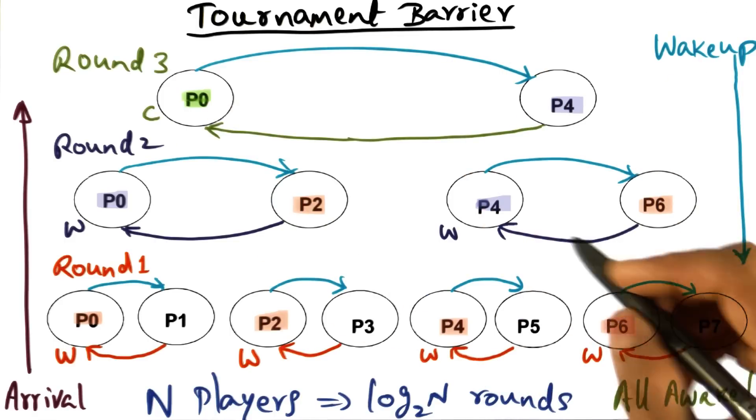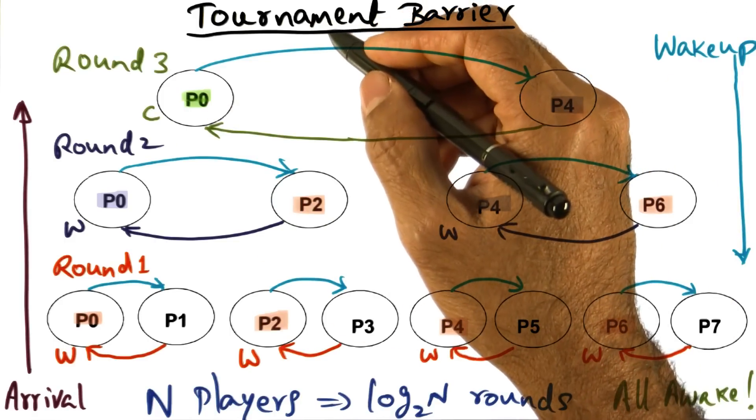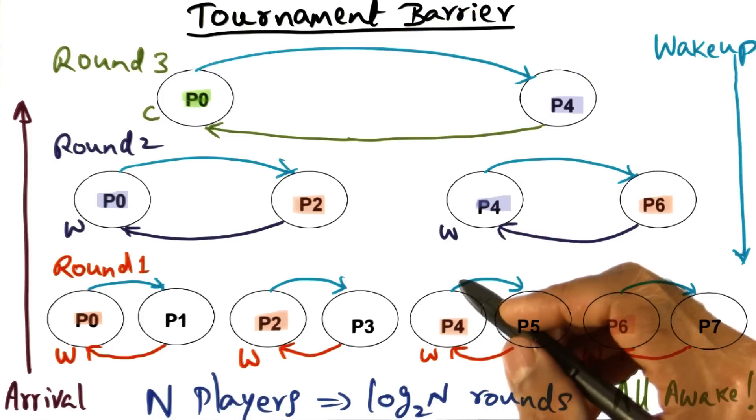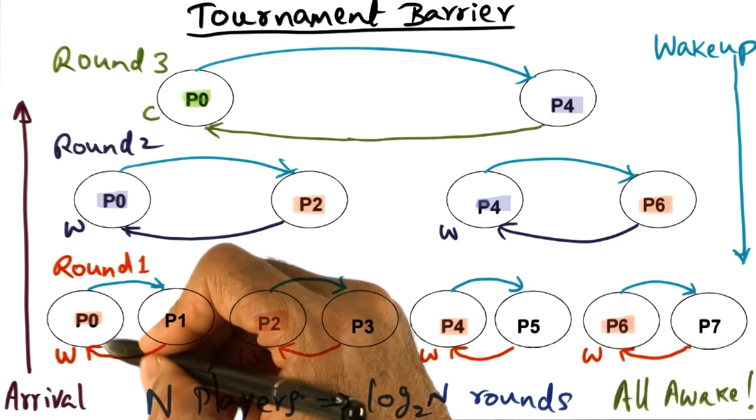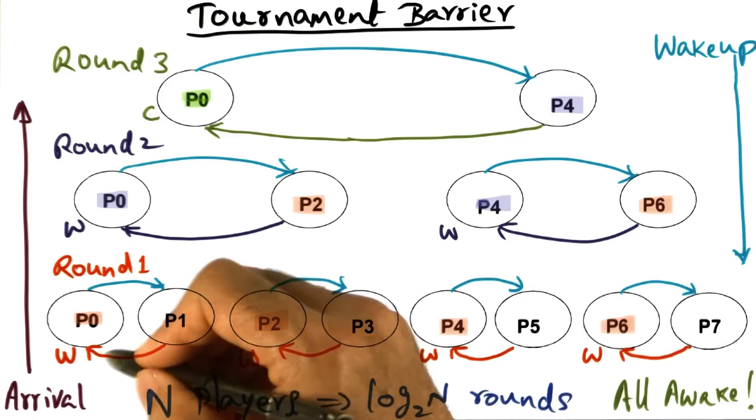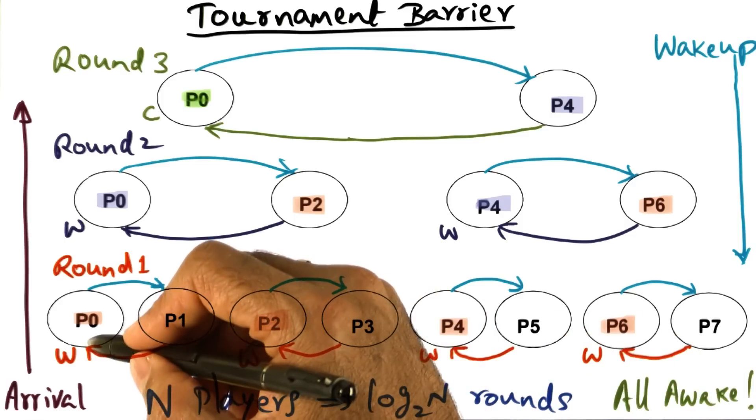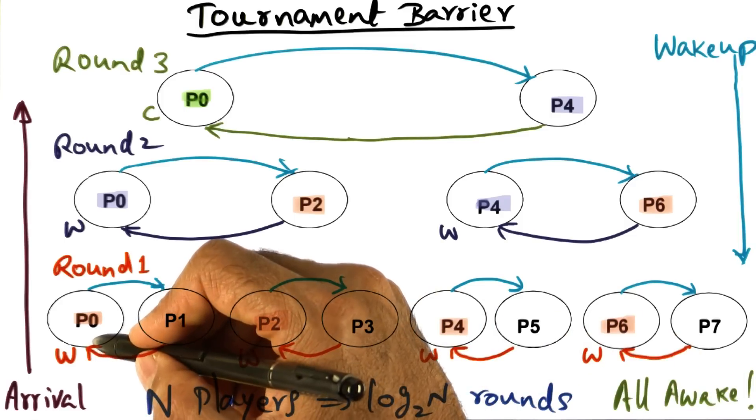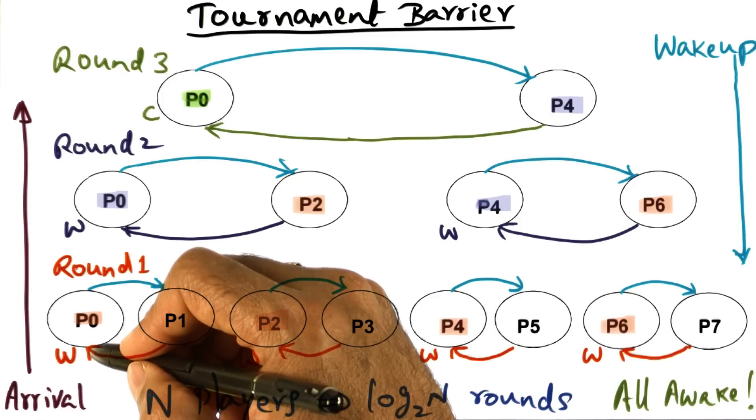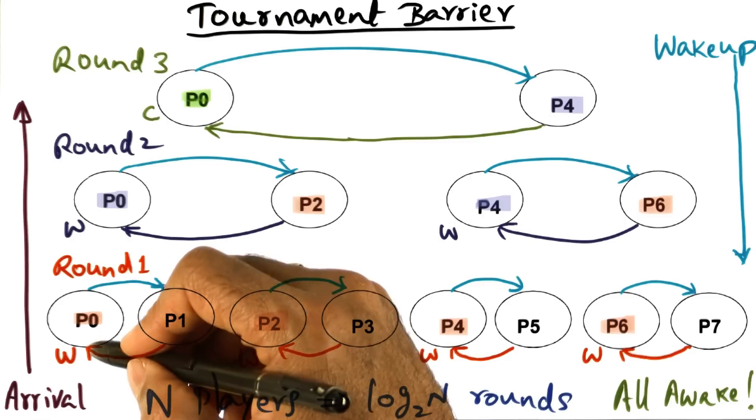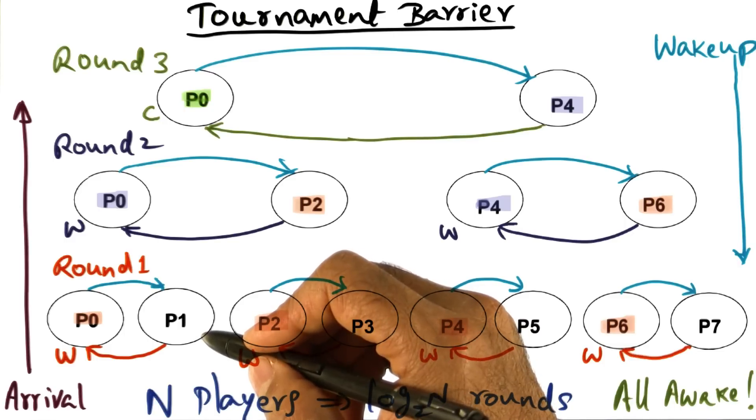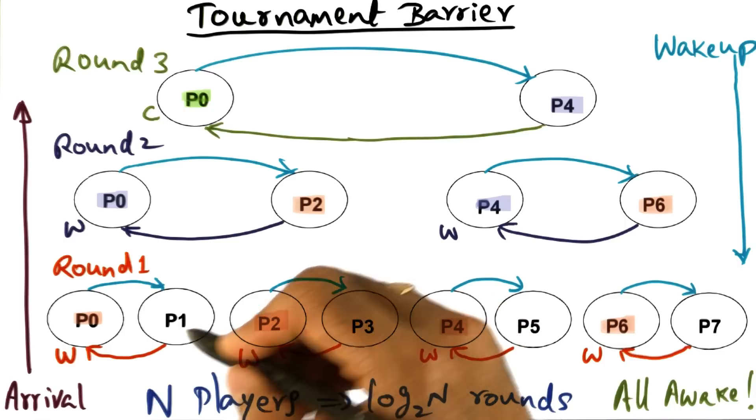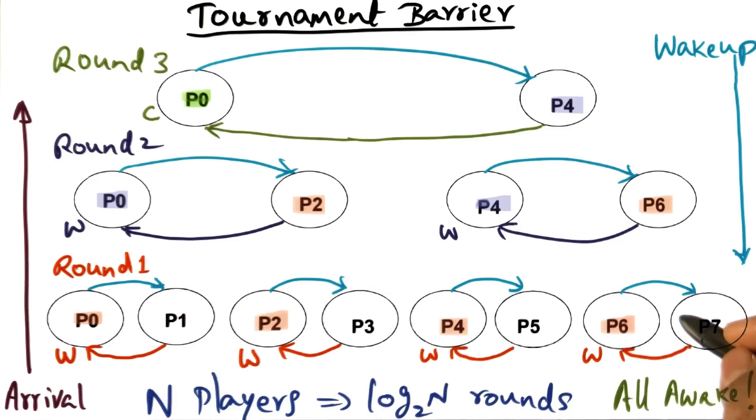Another important difference between the tournament barrier and the tree barrier is that there is no need for a fetch and phi operation. Because all that's happening at every round of the tournament, there is spinning happening, which is basically reading, and there is the signaling happening, which is just writing. So long as we have atomic read and write operation in the multiprocessor, that's all we need in order to implement the tournament barrier.